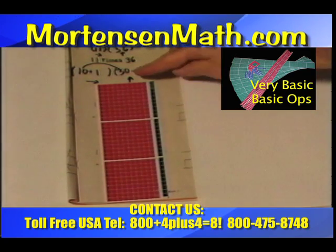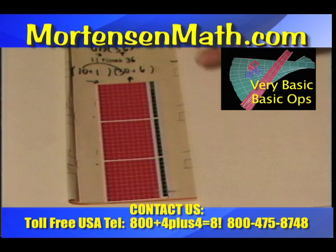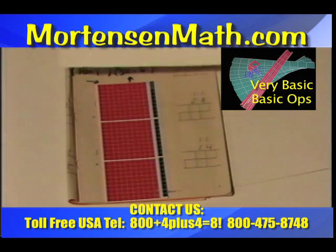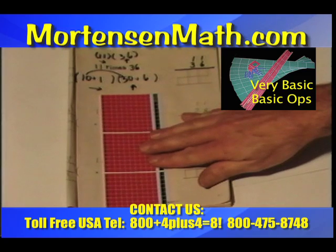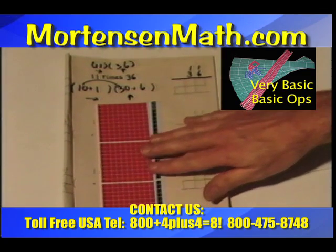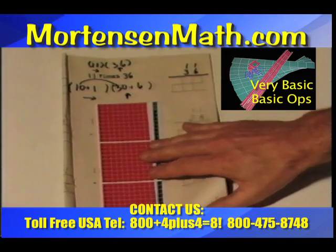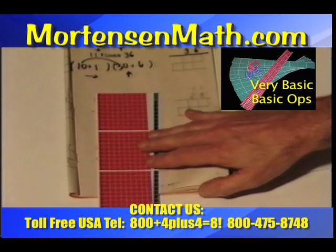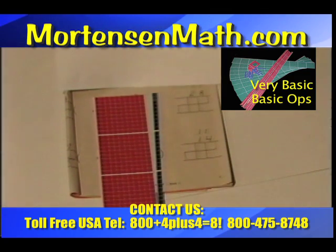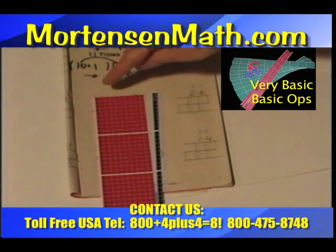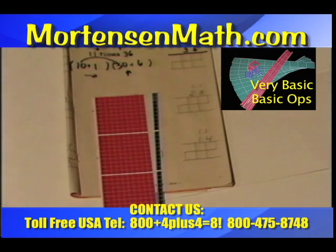We must be up 30 plus 6. We are already up 30. We must come up 6 more. Notice: 1, 2, 3, 4, 5, 6. I can see that piece, 6 by 10.